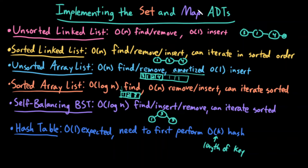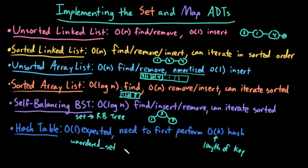As I mentioned, each of these different set implementations can be transformed into a map implementation by just storing a value as well. To briefly finish off this video: in C++ and Java, we have unordered set and ordered set classes. In C++, the ordered set is just called set and it's implemented using a red-black tree, while the unordered set is implemented using a hash table. So in C++, we have two different implementations of the set abstract data type — one using a red-black tree and one using a hash table — and generally this is fairly common in many programming languages.